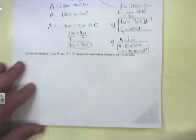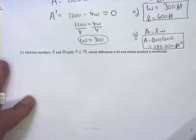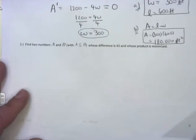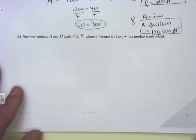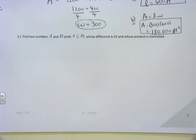So let's take a look at the next problem we were doing last time. This is on section 4.7. Number two says: find two numbers A and B, with A less than or equal to B, whose difference is 42, and whose product is to be minimized. This is one I took right off of WebWork — it's not overly difficult, and there's not really much to draw.